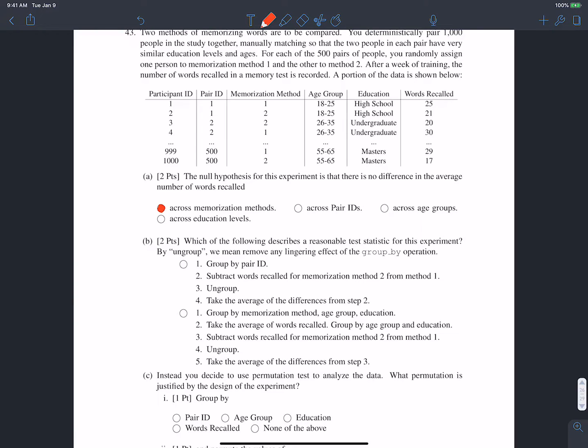Now in B, which of the following describes a reasonable test statistic for this experiment? OK, so what we would guess is for each pair of people, we would subtract the words recalled by one person by the other, and we'd expect on average that if the difference in memorization methods is insignificant, we'd expect on average that that difference should be zero. But anyways, what we'd expect is that we should do the first option. OK, group by pair ID. And then subtract the number of words recalled from the person doing memorization method one and the number of words recalled by person who's doing memorization method two. OK, and then we take the average of these distance, these differences, and that'll sort of be our test statistic.